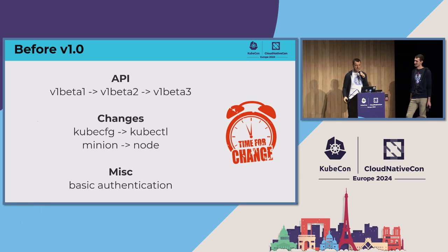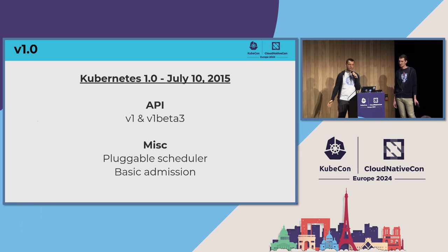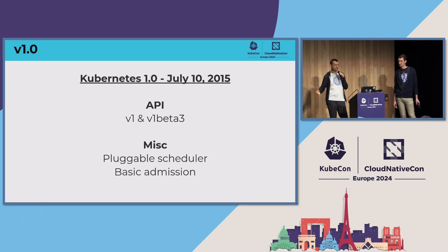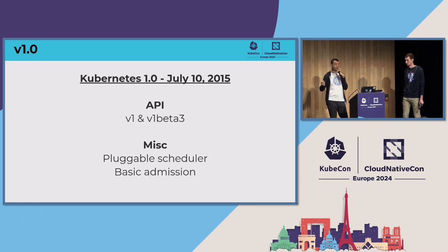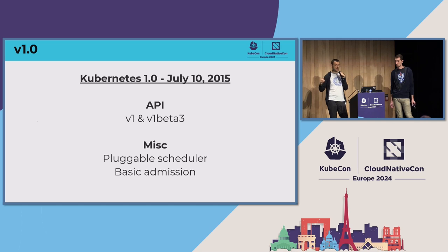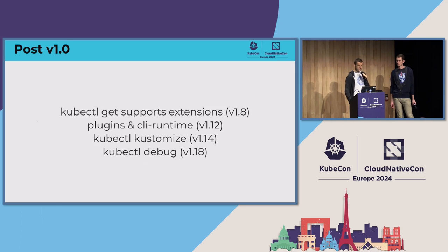Out of interesting changes, basic authentication was introduced before 1.0. We hit 1.0 around July 2015. The API reached V1, and for backwards compatibility we also shipped V1 Beta 3 so people could rely on both. At that point in time we already had a pluggable scheduler, although it required you to recompile the entire Kubernetes to include your plugins, and some basic admission plugins that you might be familiar with today.